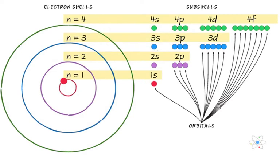The general rule is that a shell can hold up to 2n² electrons.